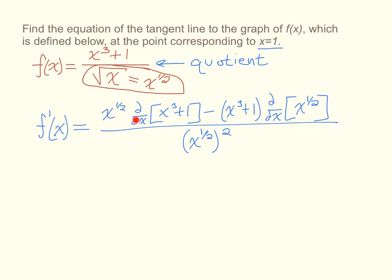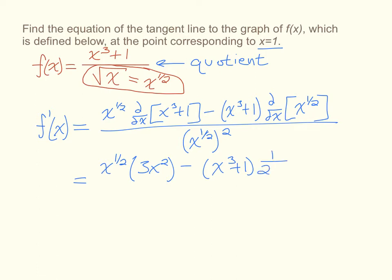The next step is to find the derivatives that the quotient rule requires. Starting with x to the 1/2 power, the derivative of x cubed plus 1 is 3x squared, using the power rule. The derivative of x to the 1/2 power is 1/2, and we also have x to the 1/2 power in the denominator. All of that is over x to the 1/2 power squared.